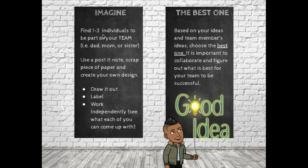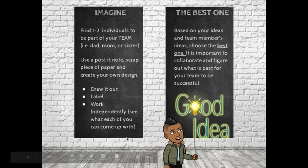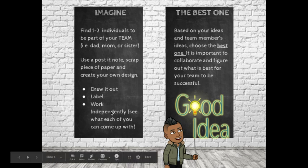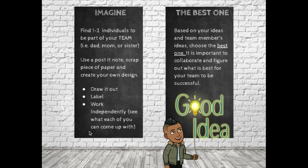You're going to find one or two individuals to be part of your team — it could be dad, mom, or sister. Using a post-it note or a scrap piece of paper, you're going to create your own design. I suggest using a pencil and maybe an eraser to draw it out. Do some labeling: what is it that you're going to use this for? Is it going to be the post? Is it going to be at the front or the end? Is it going to go over top? When you're designing, make sure there are shapes there also. Work independently — independently means by yourself — and see what each of you can come up with.